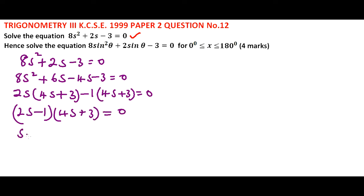This implies that s equals a half or we can say minus 3 over 4. So this is the same as s = 0.5 or -0.75. So that's our solution.